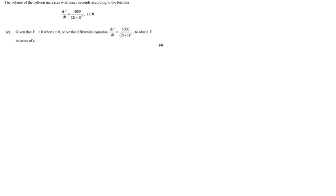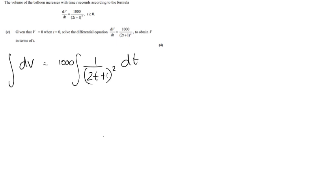Here's another differential equation question. The volume of a balloon increases with time t seconds according to dV/dt = 1000/(2t+1)². Given that V = 0 when t = 0, solve the differential equation to obtain V in terms of t. Going straight into it: dV = 1000·(2t+1)^(−2) dt, or equivalently the integral of (2t+1)^(−2) dt on the right.